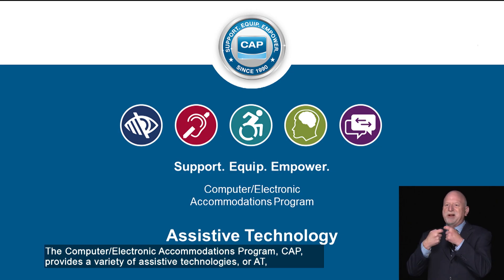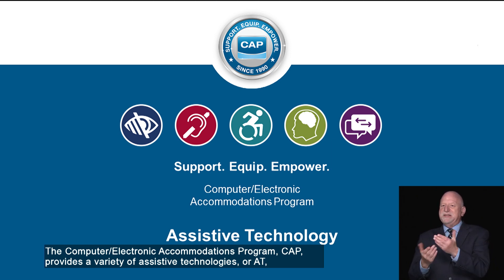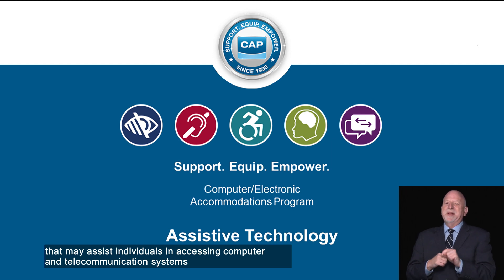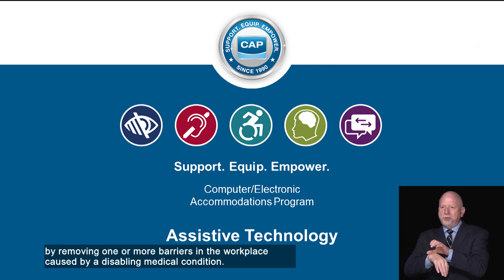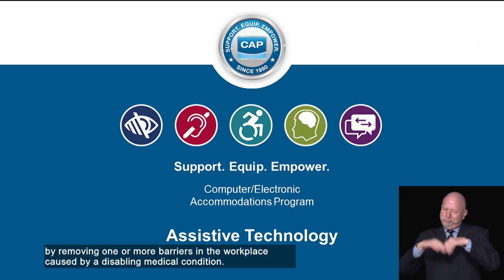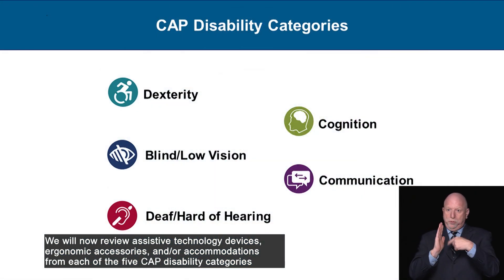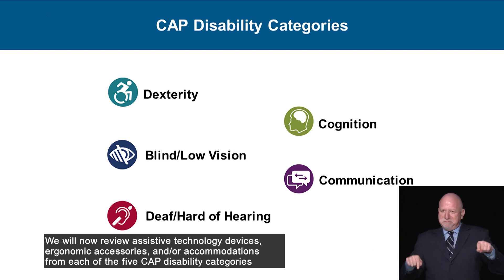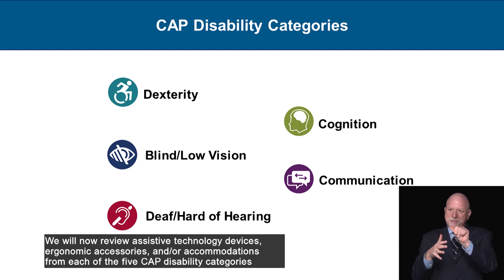The Computer Electronic Accommodations Program provides a variety of assistive technologies, or AT, that may assist individuals in accessing computer and telecommunications systems by removing one or more barriers in the workplace caused by a disabling medical condition. We will now review assistive technology devices, ergonomic accessories, and accommodations from each of the five CAP disability categories.